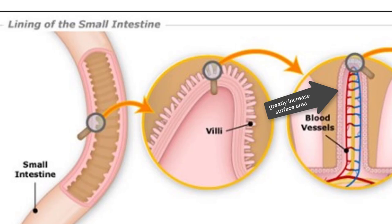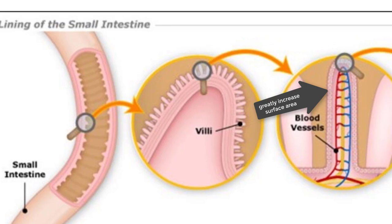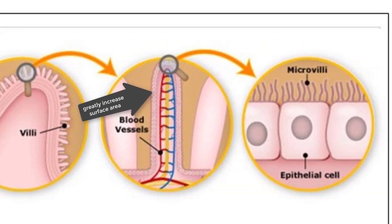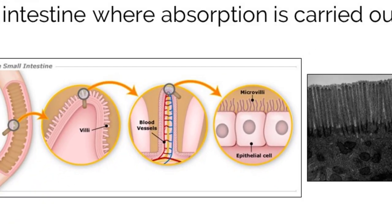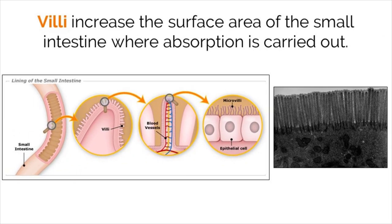Additionally, on the surface of the villi, there are also structures called microvilli that increase the surface area even more. Because of these structures, our bodies are able to absorb a large amount of nutrients to support the functions of every body system.